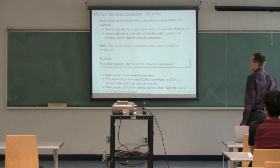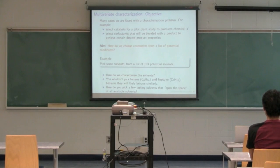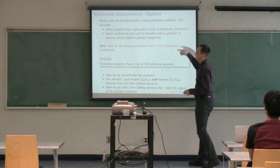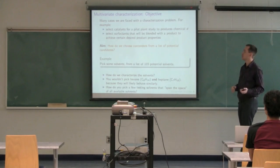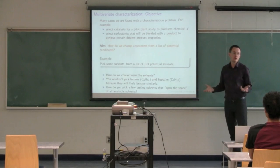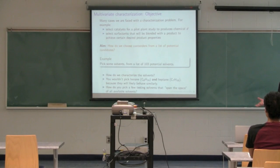Multivariate characterization addresses a particular problem that comes up in companies. It's not every day, but when it happens, it's extremely important to do it right because you can waste a lot of money doing it wrong—or conversely, get to where you want to be much faster. For example, when a company wants to select a new catalyst, they need to choose from easily 50 or 60 potential catalysts across multiple suppliers, each with a whole family of products.